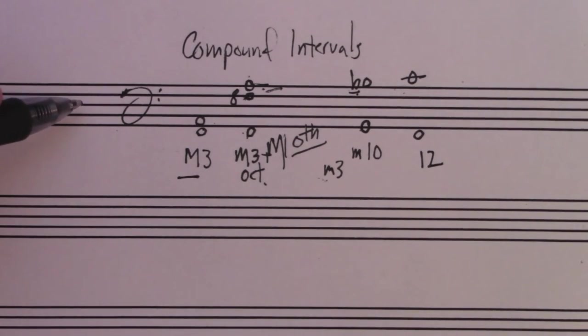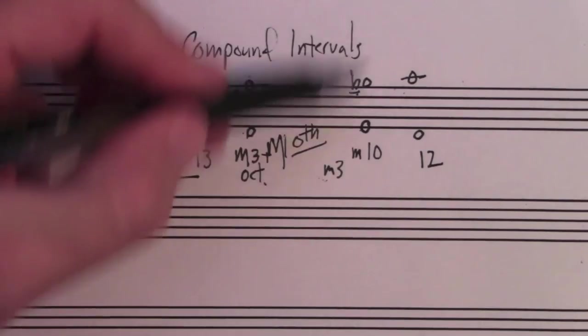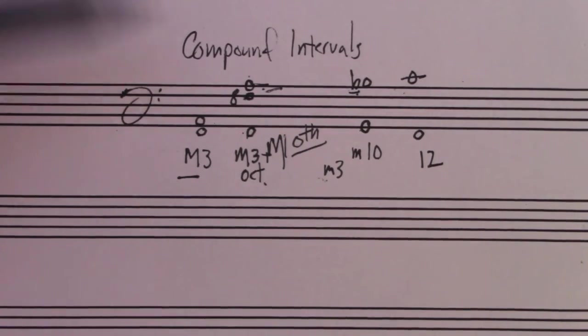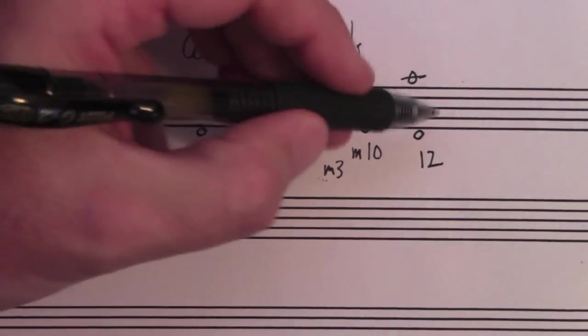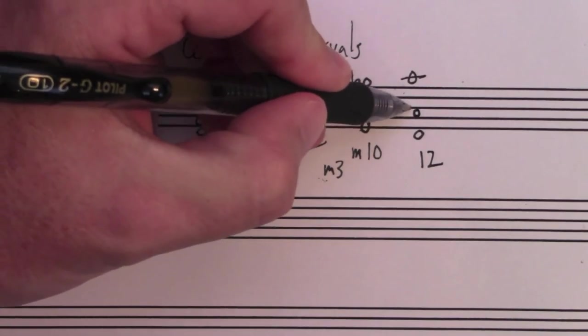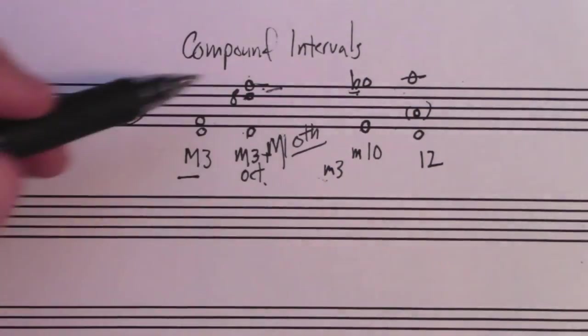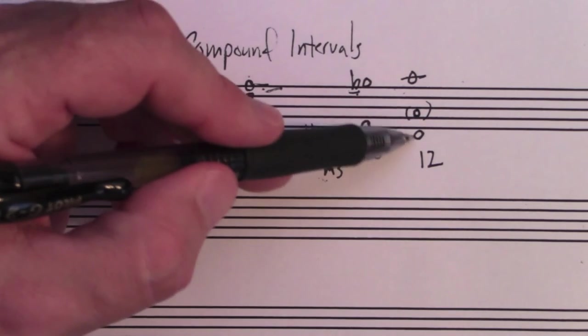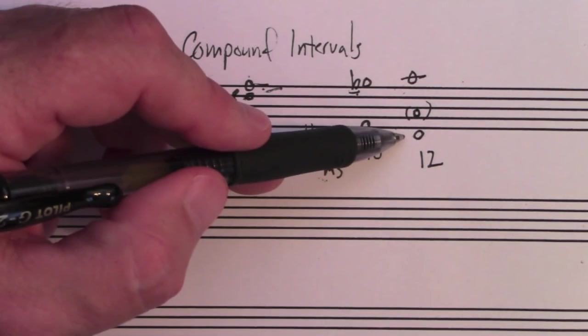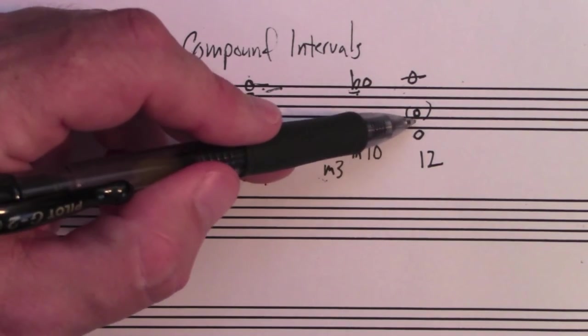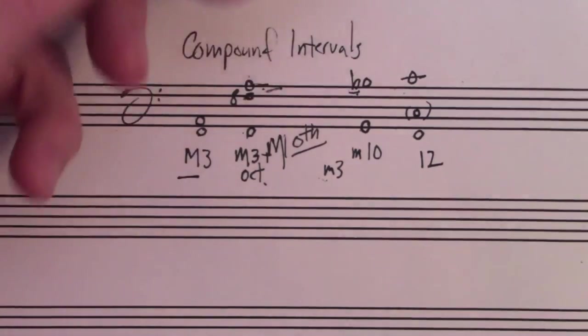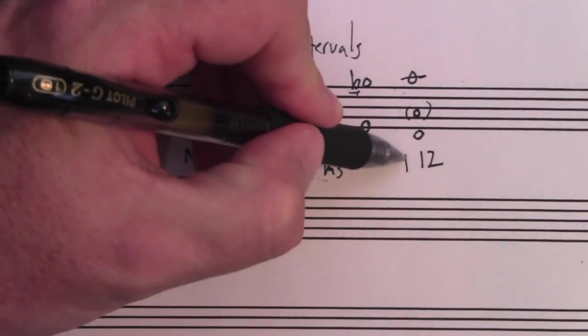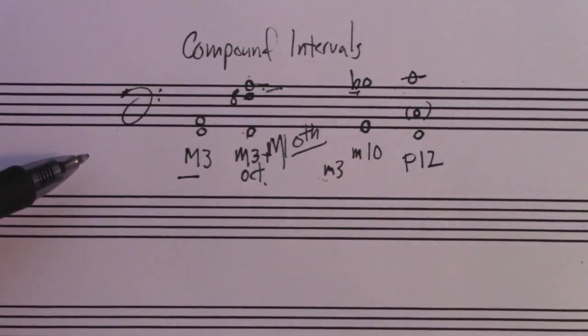Now, what kind of twelfth? Well, if it were this F to this C. Those are parentheses. What kind of, well, what would that interval be? That would be a fifth. It would be a perfect fifth. So this is a perfect twelfth.